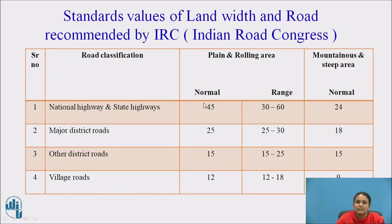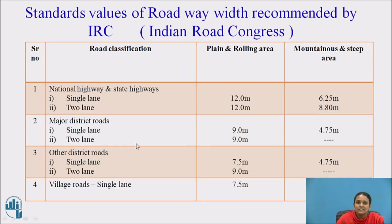These are standard land widths given by IRC — Indian Road Congress. For national highway or state highway, the normal width is 45 meters and the normal range is 30 to 60 meters; in mountainous areas, it is 24 meters. For major district roads, it is normally 25 meters with a range of 25 to 30 meters, and 18 meters in mountainous areas. Other district roads and village roads are also classified similarly. National highways are single lane and two-way; village roads are mostly single lane, provided at 7.5 meters.